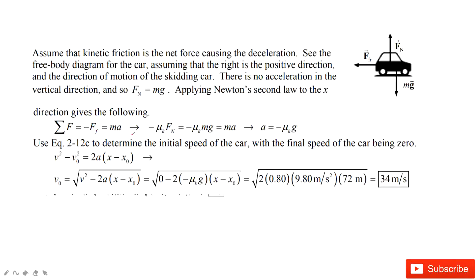Now we just input the known quantities. We know the acceleration. And then we input all the quantities. This acceleration is just negative mu k g. And then we get the final answer. 34 meter per second. Thank you.